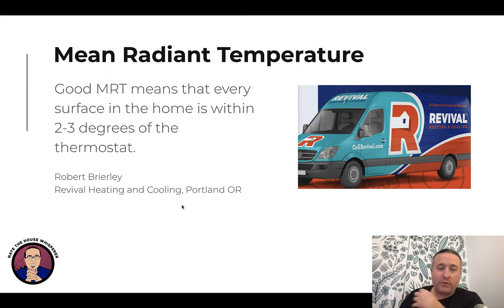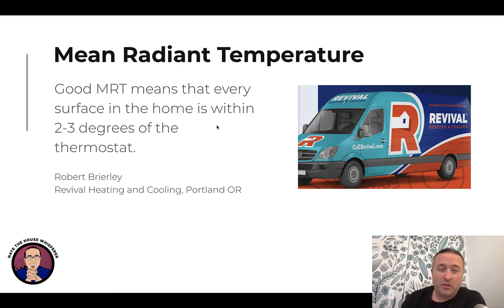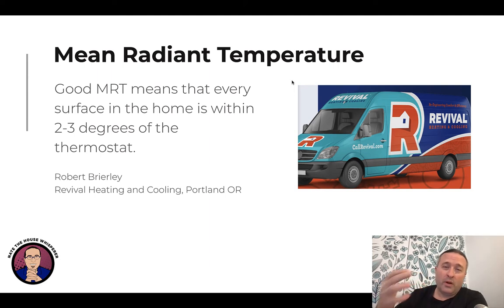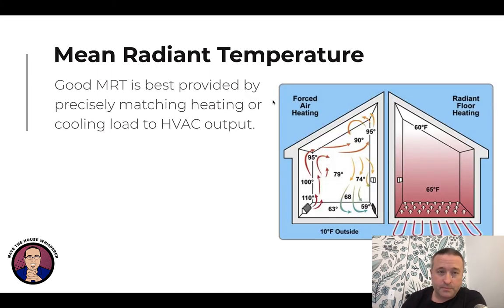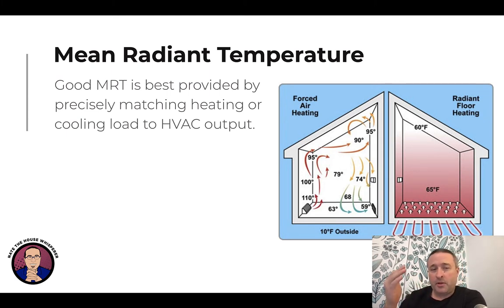Robert Brearley of Revival Heating and Cooling in Portland — he's a good guy to follow, he really knows his stuff. Good mean radiant temperature means every surface in the home is within two to three degrees of the thermostat. This is one of the best explanations for MRT: you want all surface temperatures within two to three degrees of what the stat says. If you can do that, you're going to have a really comfortable house. The best way to achieve this is the first of the six functions of HVAC: load matching.